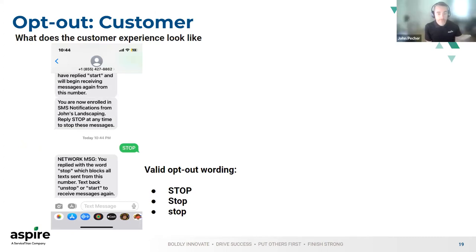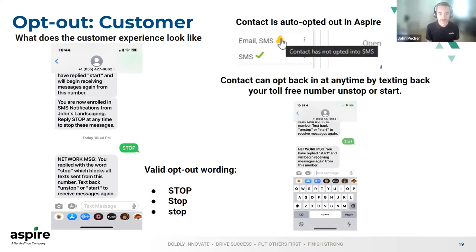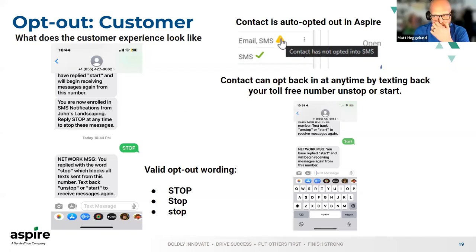In the case that they want to stop, they just need to reply stop to the number, and then they'll stop receiving messages. At that point, we flip that green checkmark to that yellow alert icon. And that contact can re-enroll at any time — you don't even need to do anything in Aspire. All you need to have them do is respond start again in that same message thread and they'll be re-enrolled. If people delete the original thread, you have access to the toll-free number via the admin notifications page, so you can grab that and tell them to text start to the number to get back enrolled.